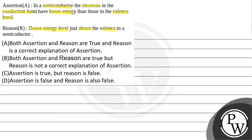Option C: Assertion is true but reason is false. And option D: Assertion is false and reason is also false.